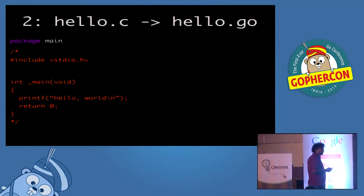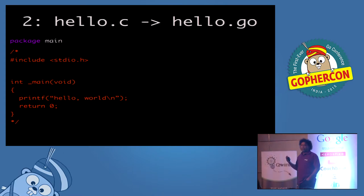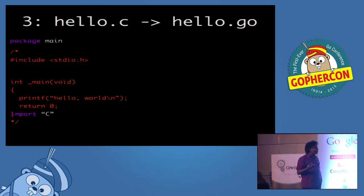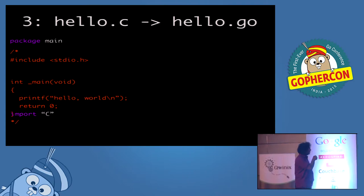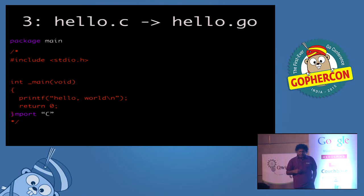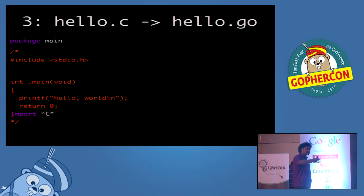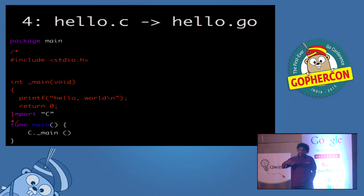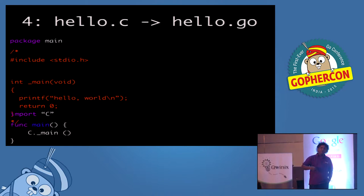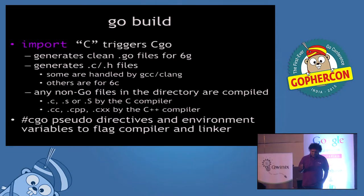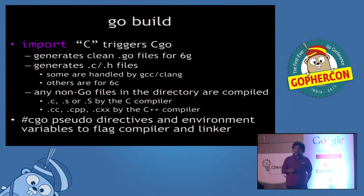All the magic happens when you run go build. You build it no different from regular Go code. When the toolchain sees the import C, it triggers CGo. What happens is there are some Go files that get generated and some C files that get generated. Any non-Go files in the directory are considered for compilation, so C or C++ code will also get handed off to a C or C++ compiler. You can also, to a certain extent, control the compiler and the linker by using these #cgo pseudo-directives in your code.